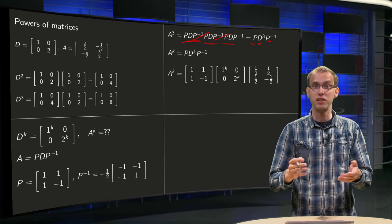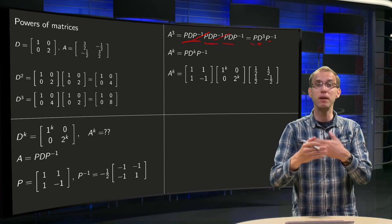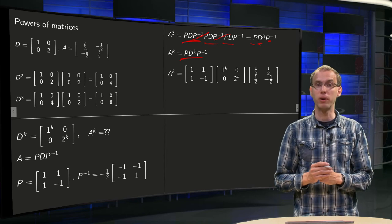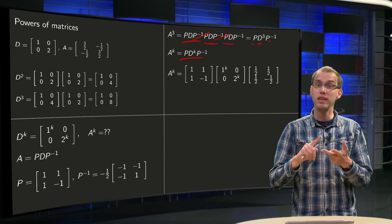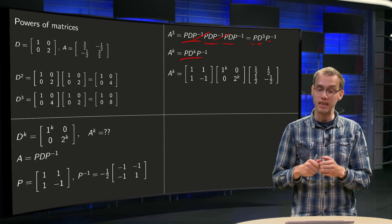See, you can generalize it. Just put a lot of more A's behind each other, and all the P and P inverse cancel out, and you have a formula for A to the power k. You need P and P inverse, and you only need to compute D to the power k, but computing D to the power k, that is easy.